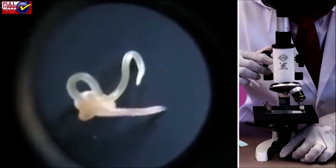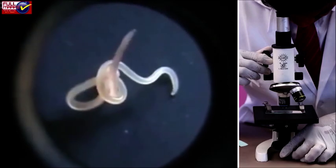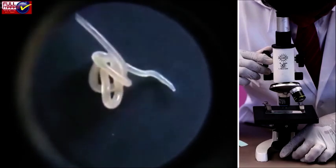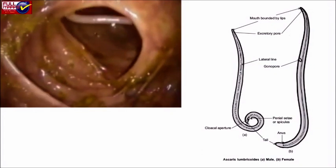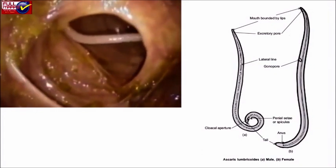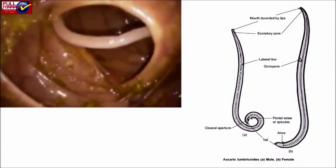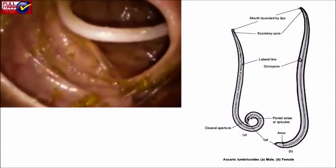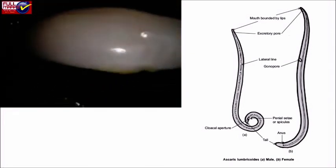Comments: Ascaris is a common endoparasite of man found in the small intestine. It is elongated, cylindrical, vermiform, yellowish or pinkish in color and tapering at both ends. Size of male is 15 to 30 cm x 3 to 4 mm. Females are 20 to 40 cm x 6 to 8 mm.